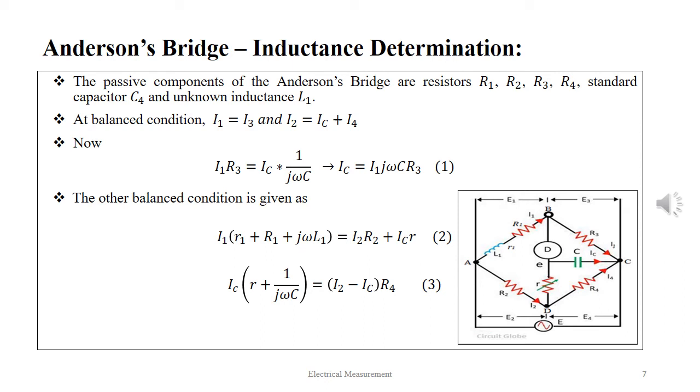The passive components of the Anderson's bridge are resistors R1, R2, R3, R4, standard capacitor C and an unknown inductance L1.